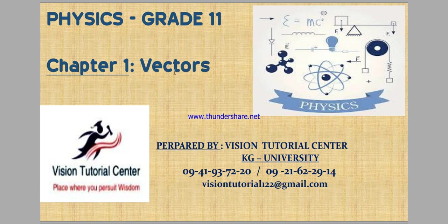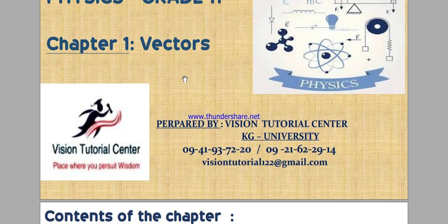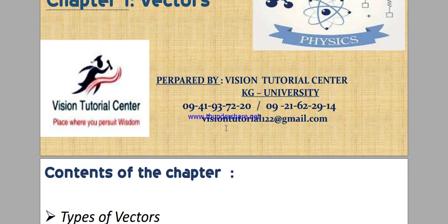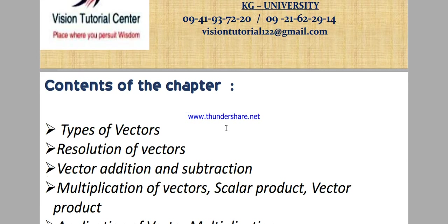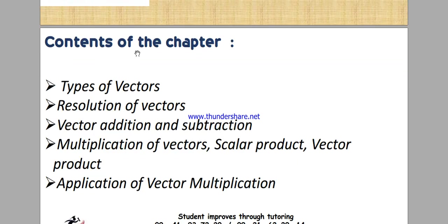Chapter 1. We have vectors, so we have vector addition and subtraction, then multiplication of vectors. Vectors could be multiplied — we could have scalar product,